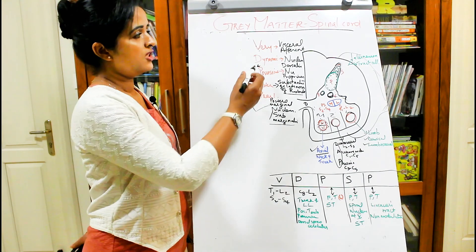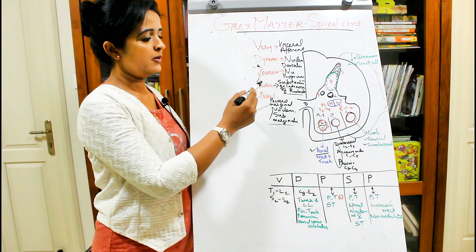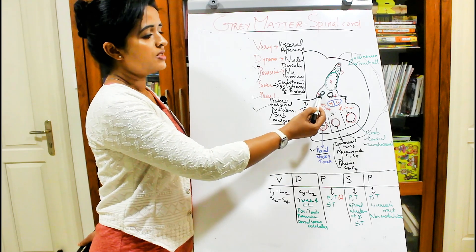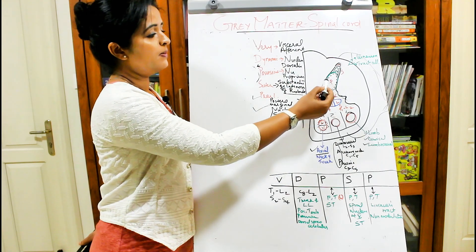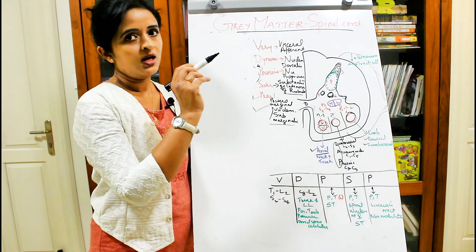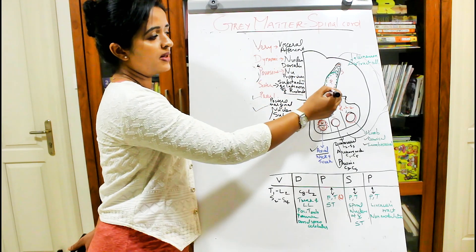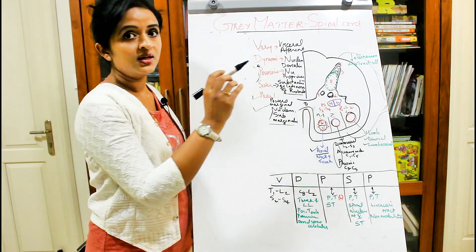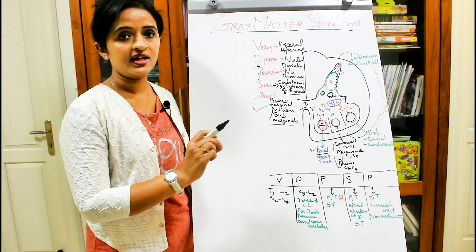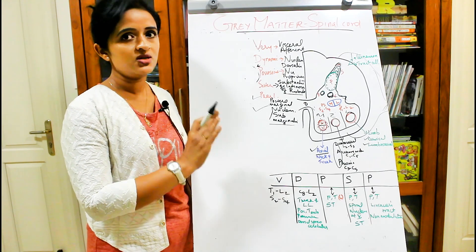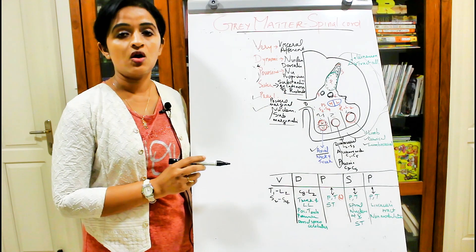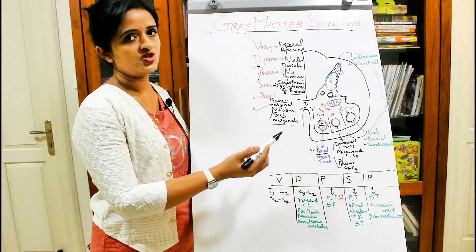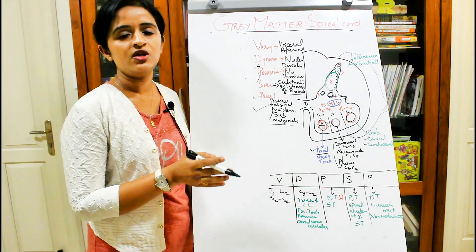The code for the posterior horn is very dynamic: 'possessive sister pearl.' V stands for the visceral afferent nucleus, D stands for nucleus dorsalis, P stands for nucleus proprius — which is actually the biggest mass in the posterior column — S stands for substantia gelatinosa, and the final P stands for posteromarginal nucleus.